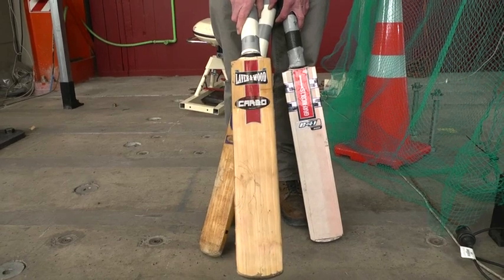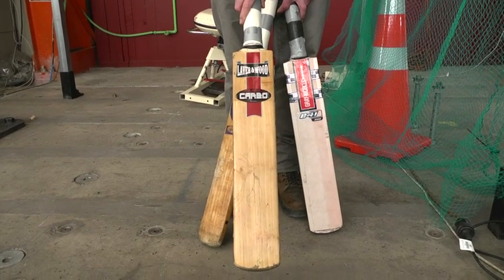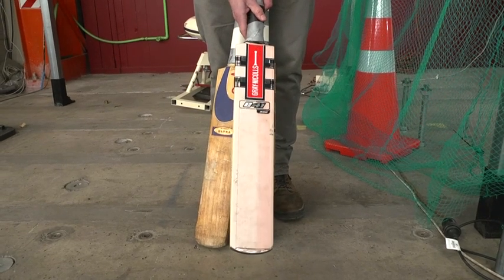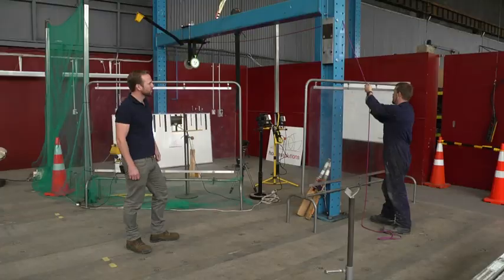So the heavier, slower bat was clearly the biggest hitter, even though the newer, lighter Grey Nickels is actually a bigger bat. And back to the studio for an argument.